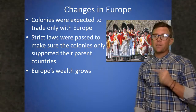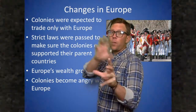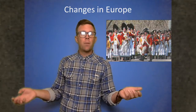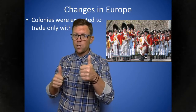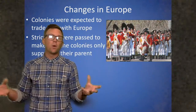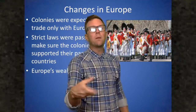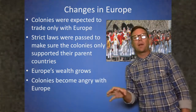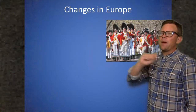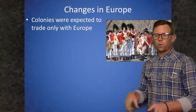The nations that conquered these areas expected colonies to trade only with their parent nation. Strict laws were passed to ensure colonies only supported their parent countries. Then these parent countries began taxing the colonists, although the colonists had no representation in their parliaments. This is where the term 'no taxation without representation' comes from, which became the battle cry of the early stages of the American Revolution. Europe's wealth grew exponentially — they became the wealthiest continent on the planet. With taxation on colonists who had no say in it, the colonies grew very angry with Europe, leading to the American Revolution.